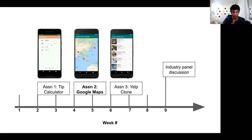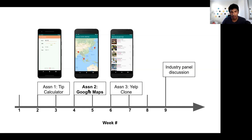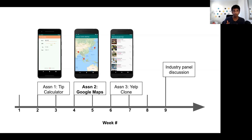Looking at the course diagram, we're at week five. This is a 10-week quarter as opposed to spring quarter. Assignment two, which is Google Maps, has just been assigned. Assignment one just finished up, so at this point you all should have submitted the assignment and received feedback from your partner about what you did in terms of extensions and what you could have improved on.